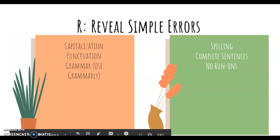R, reveal simple errors. This is where you're looking back for capitalization, punctuation, spelling, run-ons, complete sentences, grammar. Did you use Grammarly to check your paper? Look at all the suggestions that it makes and decide if you need to make some changes based on that. So, reveal those simple errors. Go back and fix these.